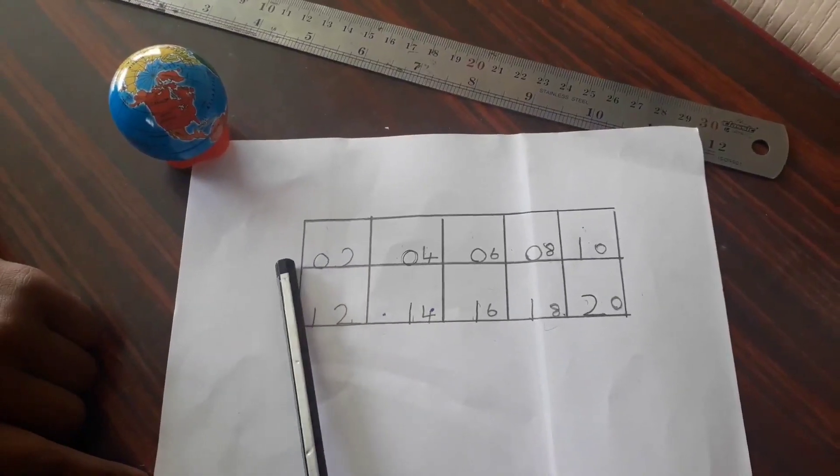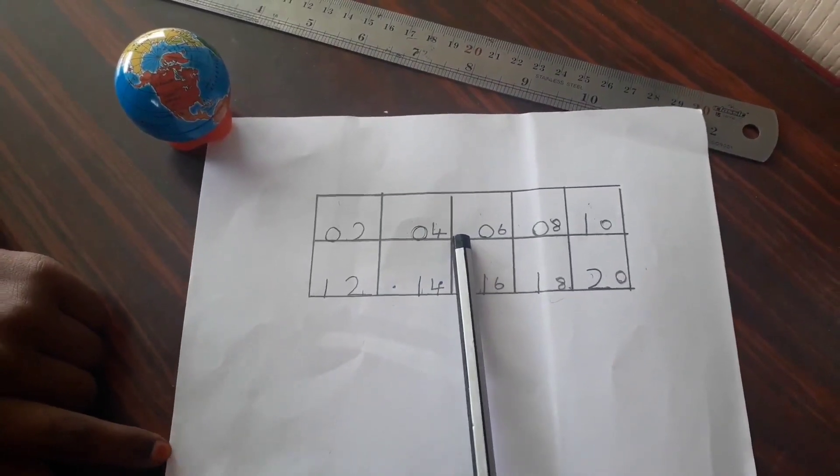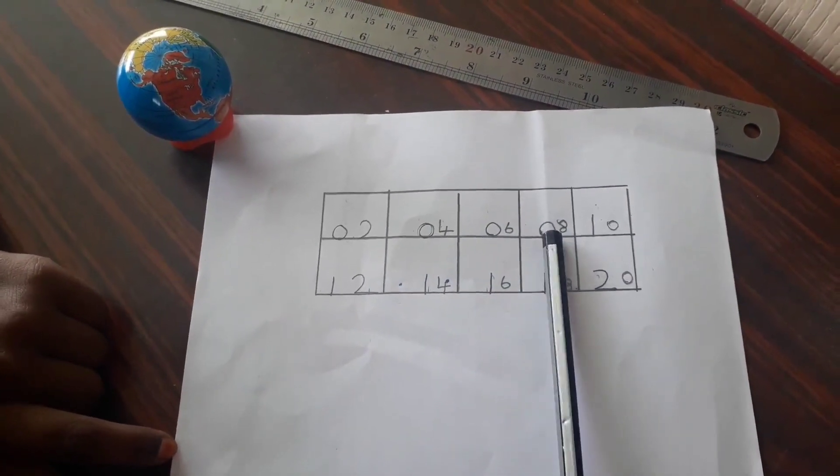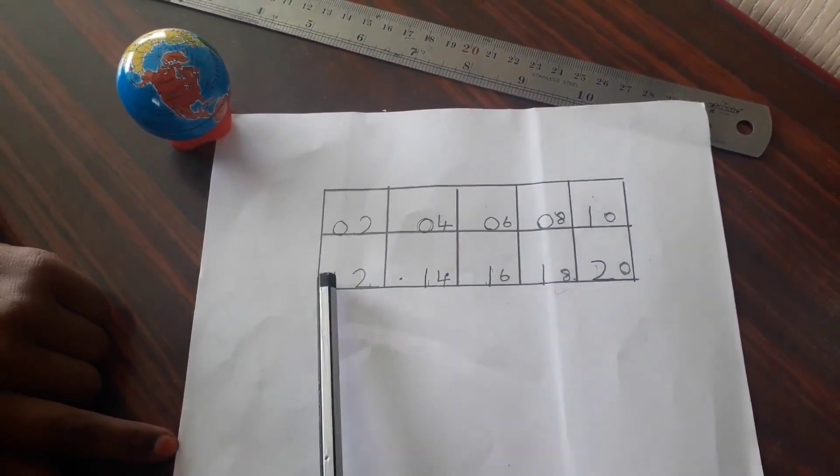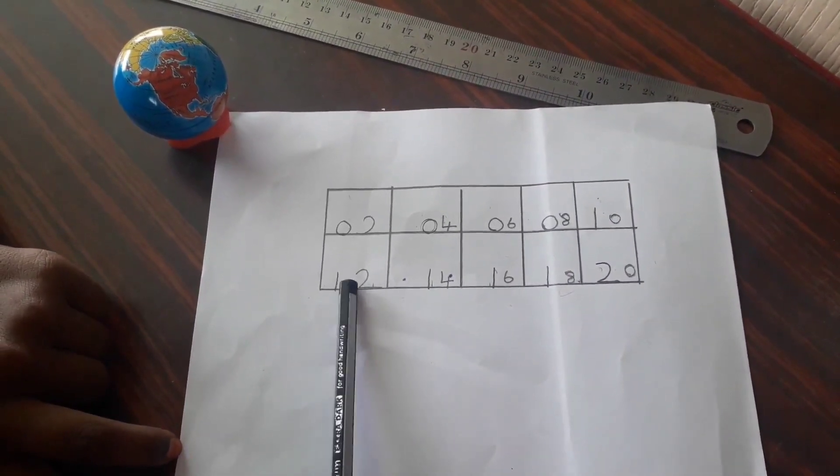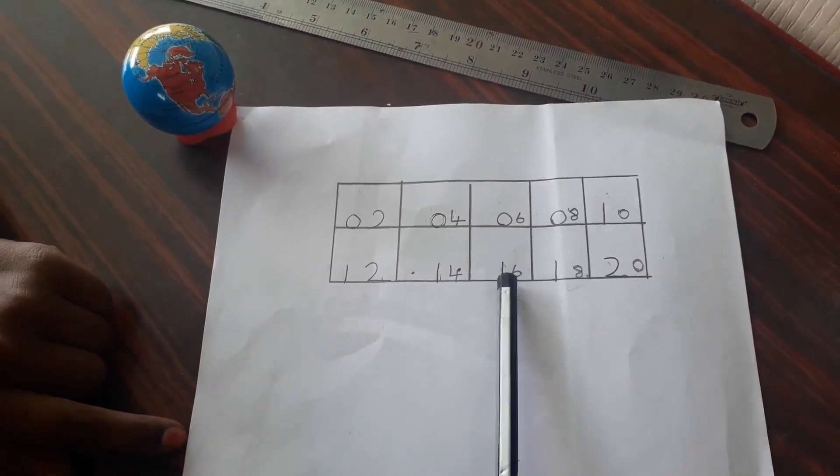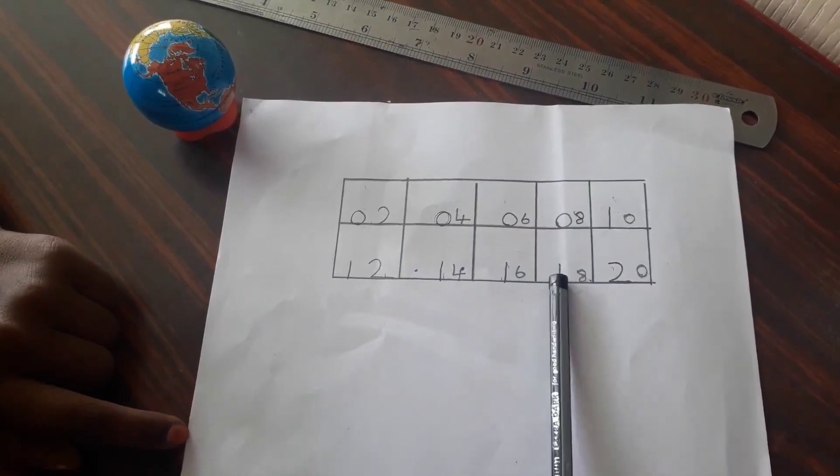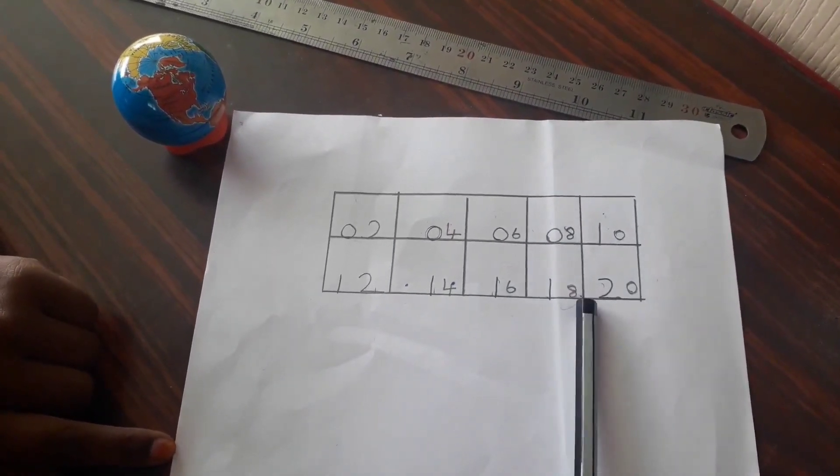2 ones are 2, 2 twos are 4, 2 threes are 6, 2 fours are 8, 2 fives are 10, 2 sixes are 12, 2 sevens are 14, 2 eights are 16, 2 nines are 18, 2 tens are 20. It's over.